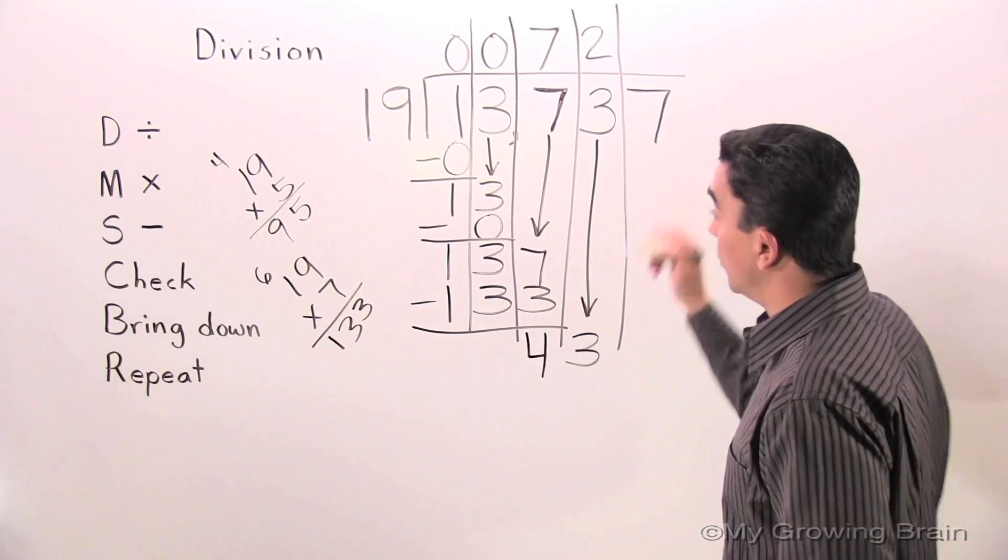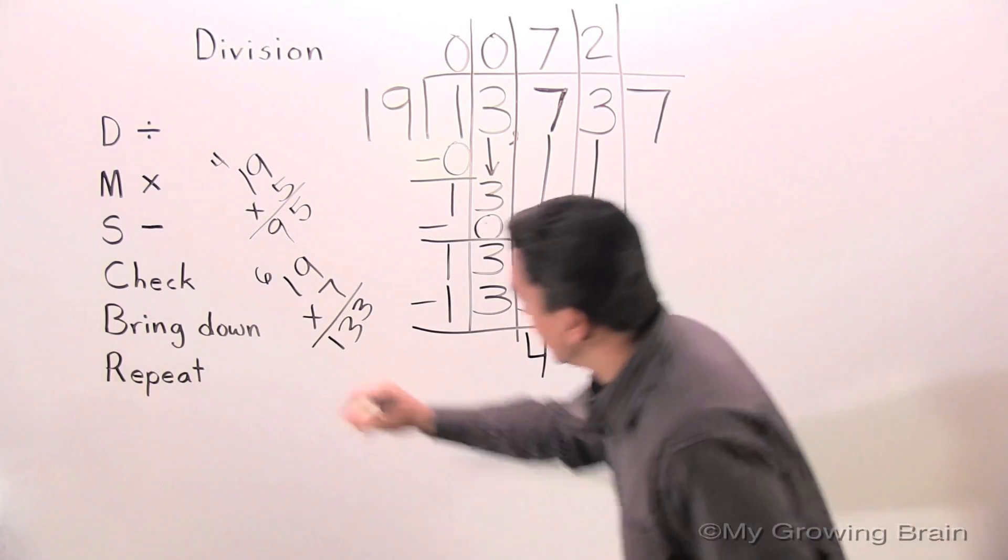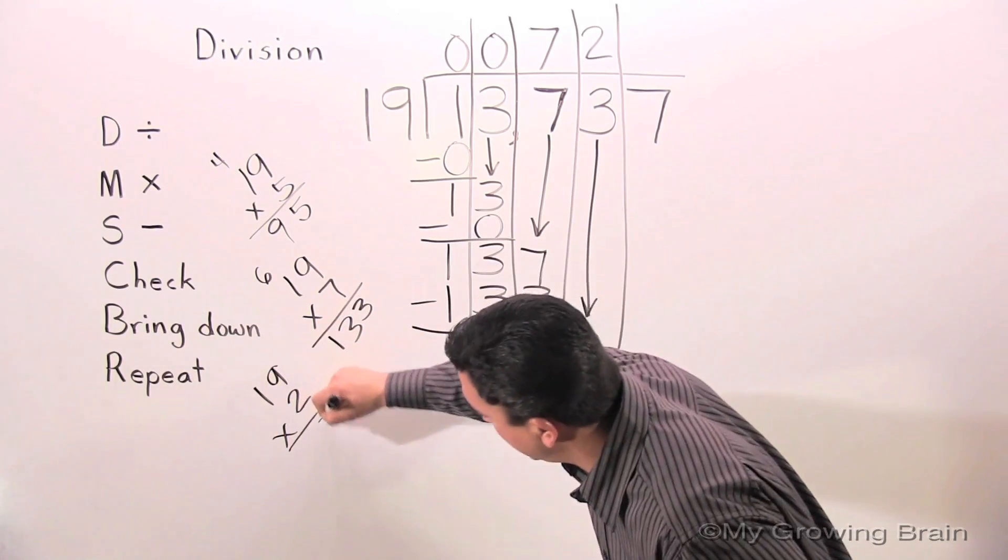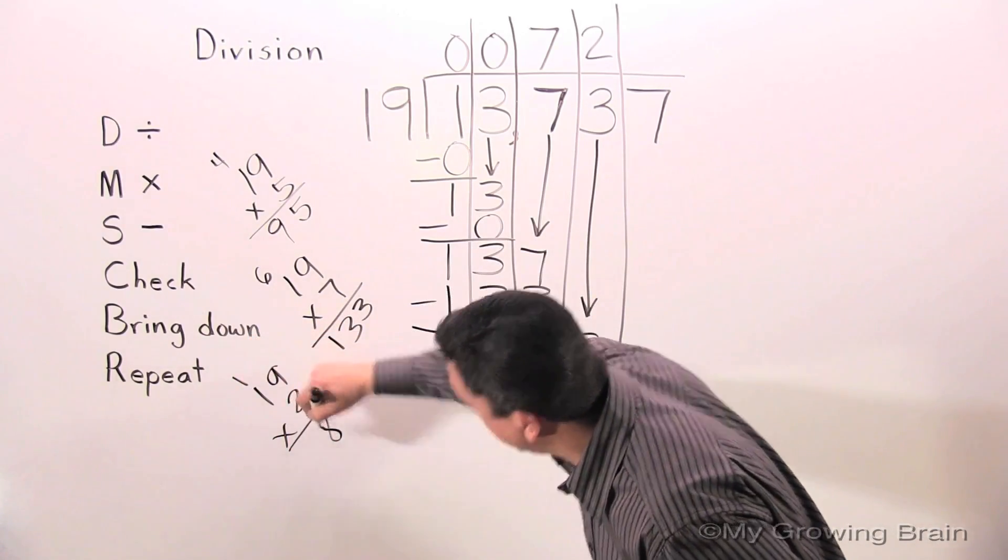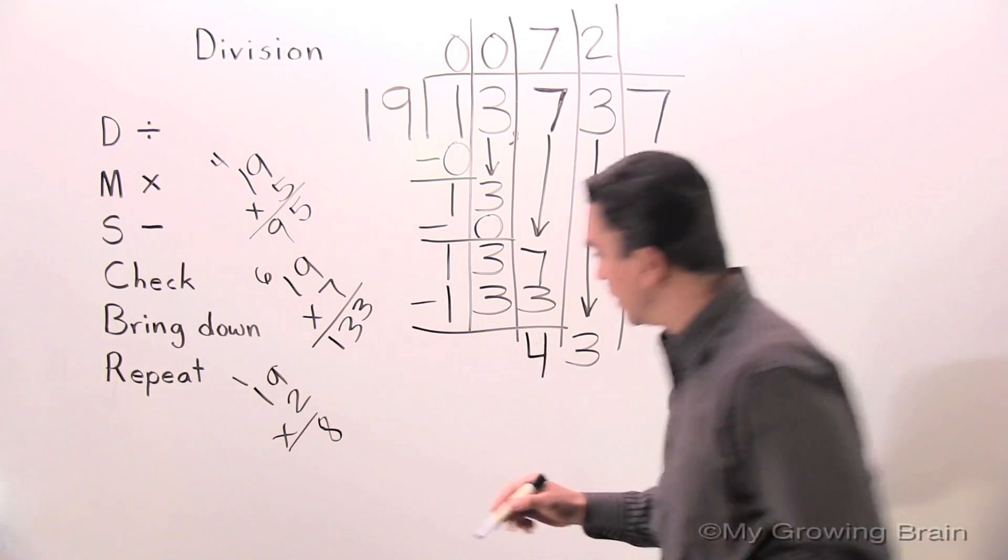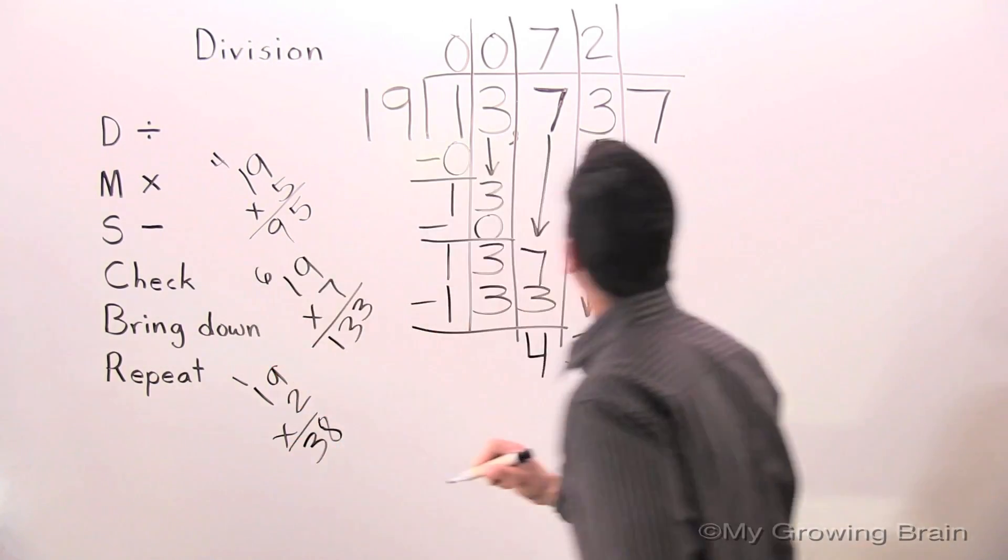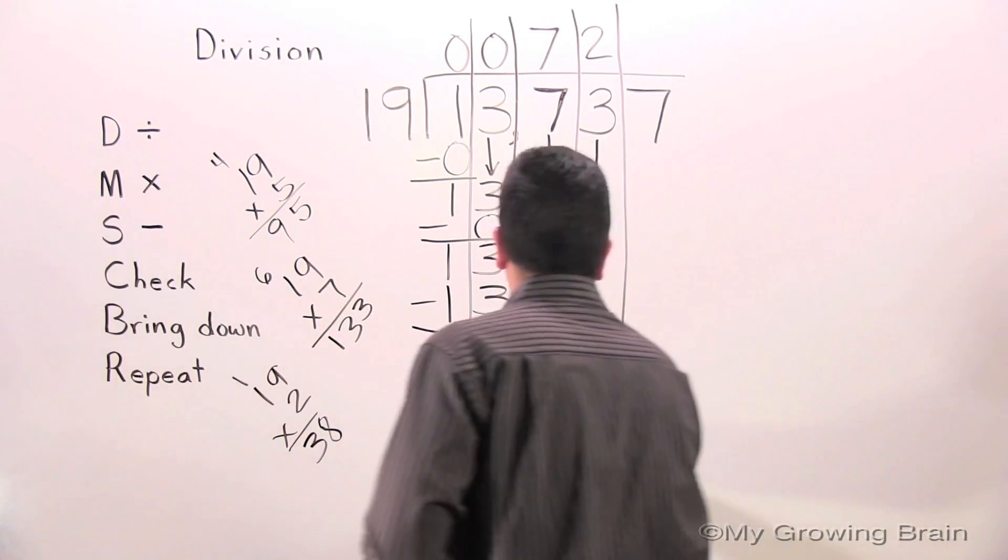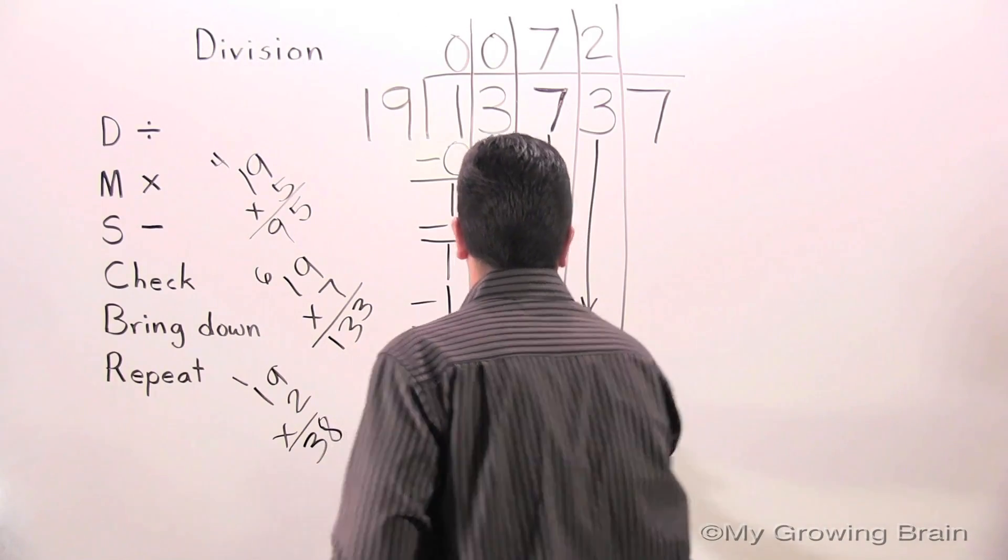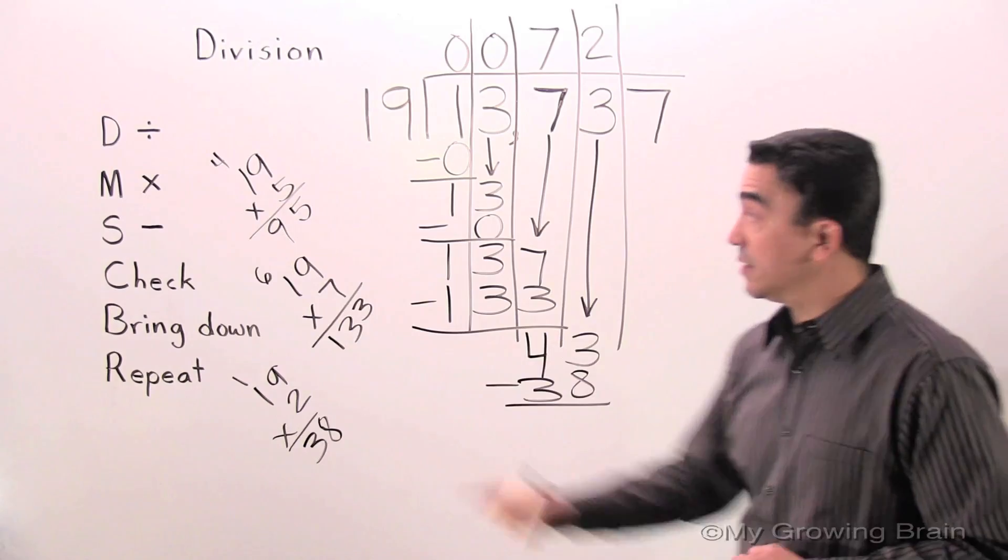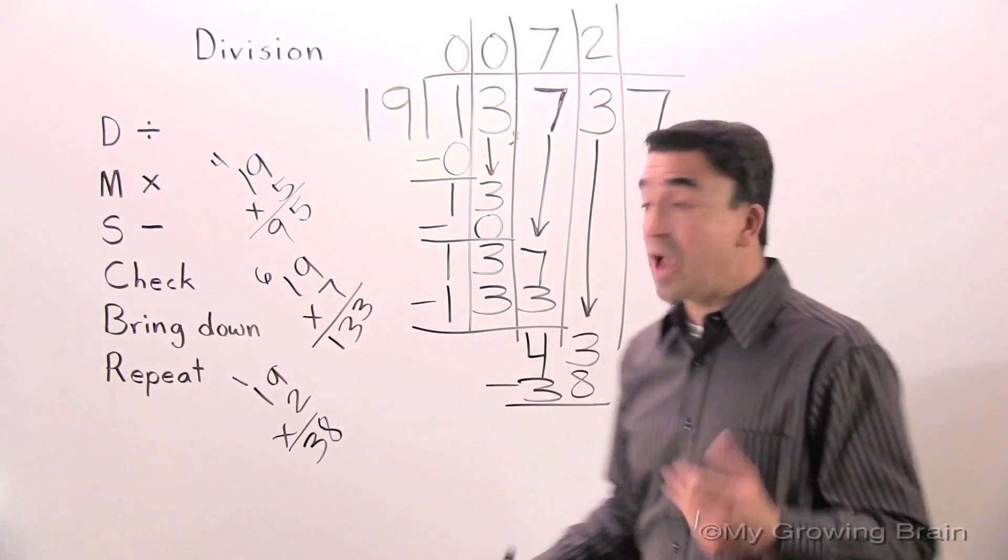19 times 2. 2 times 9 is 18. Regroup the 1. 2 times 1 is 2. Plus 1 is 3. All right. So, 19 times 2 is 38. 43 minus 38. That's our next step. Subtract.